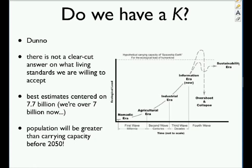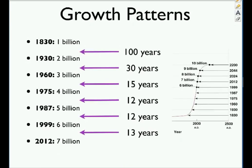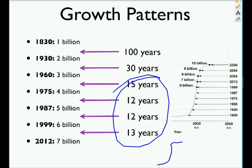Some interesting numbers on human population milestones: going from 1 to 2 billion took 100 years; 2 to 3 billion took 30 years; 3 to 4 billion took 15 years; 4 to 5 billion took 12 years; 5 to 6 billion took 12 years; and 6 to 7 billion took 13 years. The rate seems to be leveling off — our J-curve may be starting to flatten.